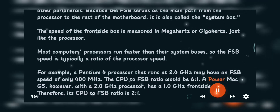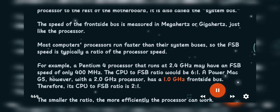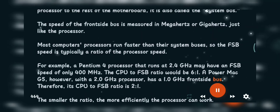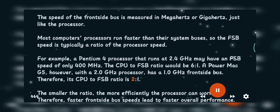A Power Mac G5, however, with a 2.0 gigahertz processor has a 1.0 gigahertz Front Side Bus. Therefore its CPU to FSB ratio is 2:1.